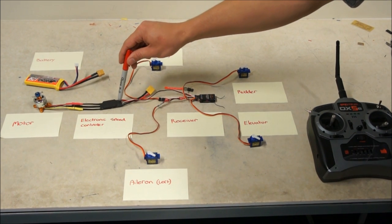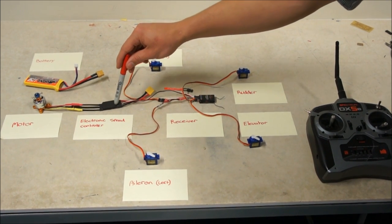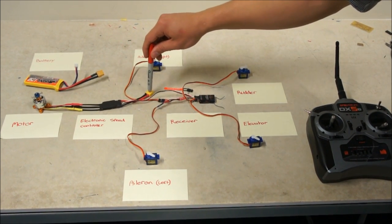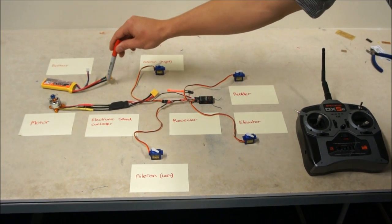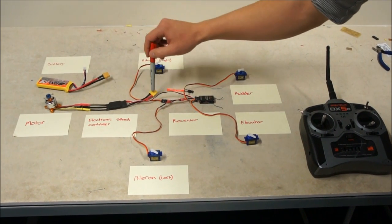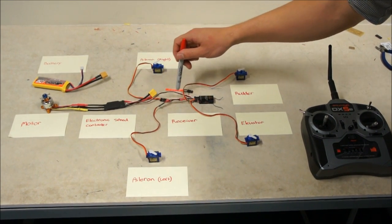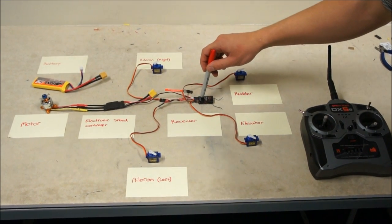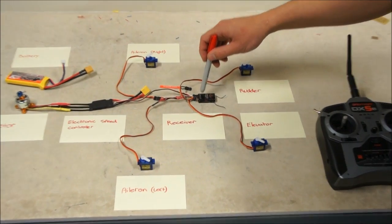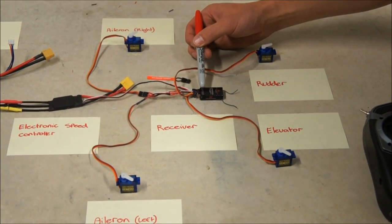The electronic speed controller takes power from the battery. So there's a battery terminal here and that connects to here. So when we're ready to go, we'll connect those two together and takes that power down to the receiver along this wire. And that goes into the one labelled throttle, so THRO.